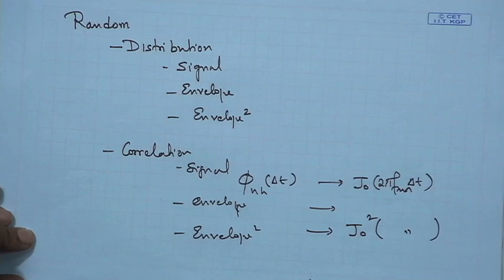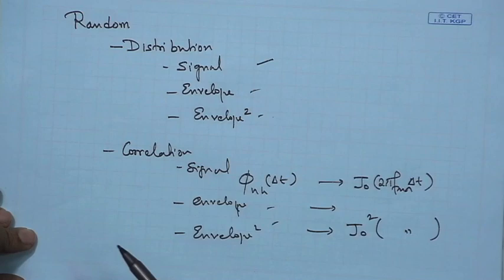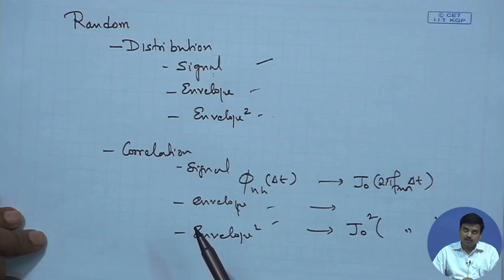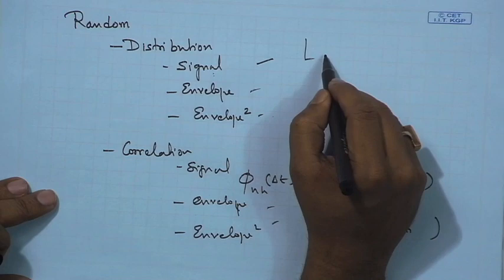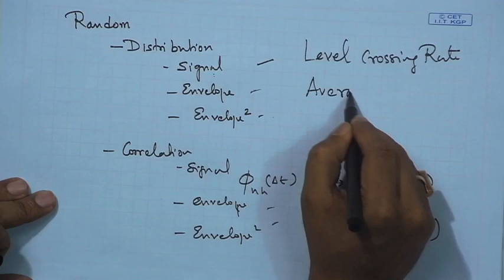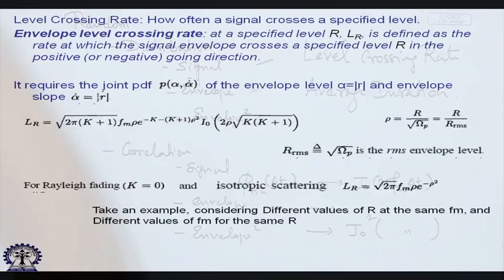The envelope and envelope squared are important because this will be the amplitude and the power of the received signal, which is important when we do baseband processing. Along with these, to characterize the signals and to design better communication systems, we also look at two important parameters: the level crossing rate and the average duration of fade. With this characterization we would be fairly well characterizing the received signal for the particular case we are considering.